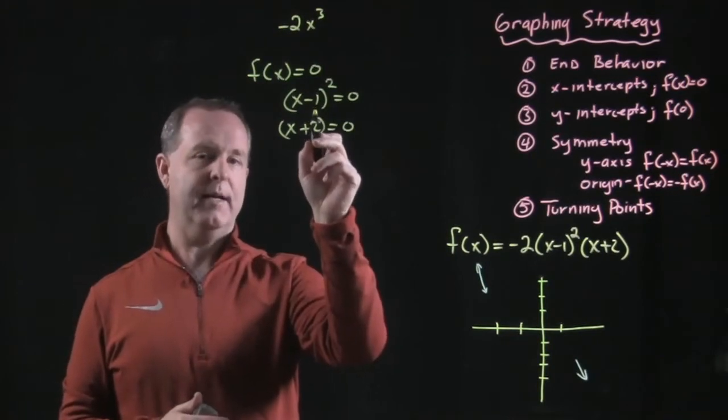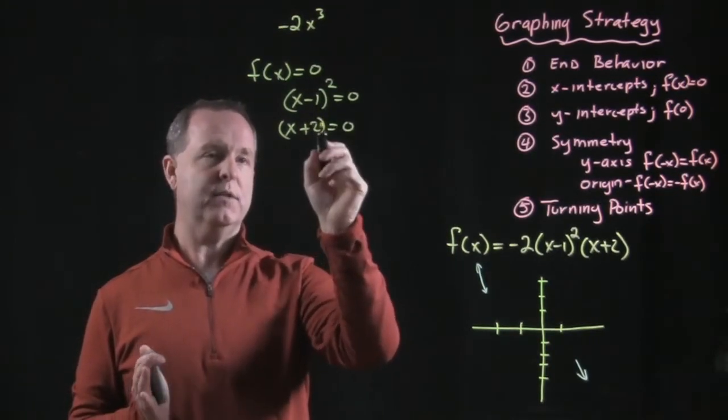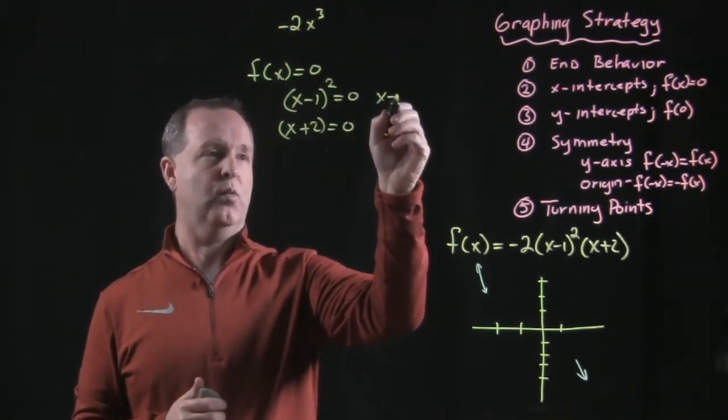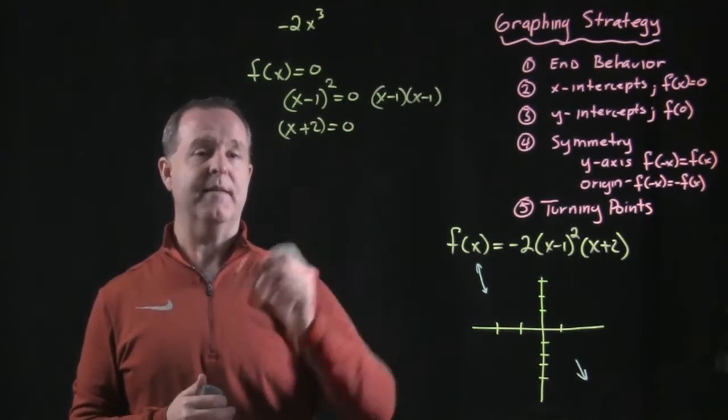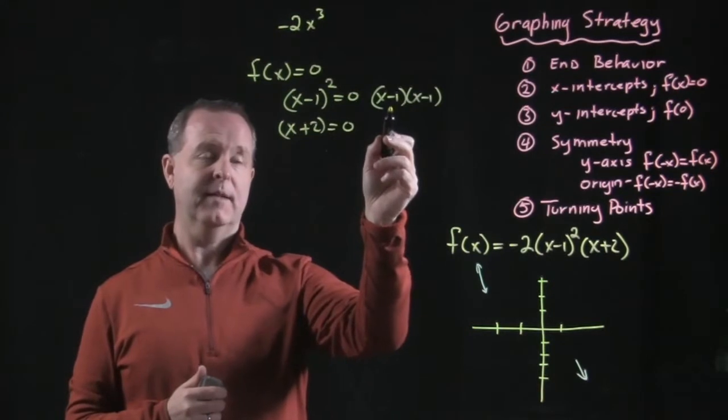Now, notice this top one, x minus 1 squared. There's really two sets there. This is x minus 1, and another x minus 1. Which tells me then, in this first factor term, if x were a 1,